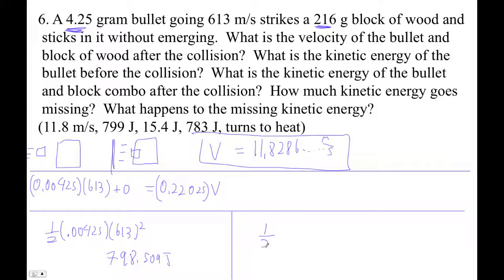Okay. And then afterwards, we've got this thing, 0.5, the block is 0.22025, is the bullet plus the block, right? Notice you got to do this in kilograms. And then 11.8286, et cetera, et cetera, meters per second squared.